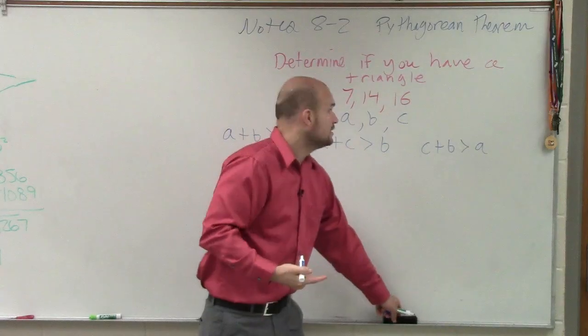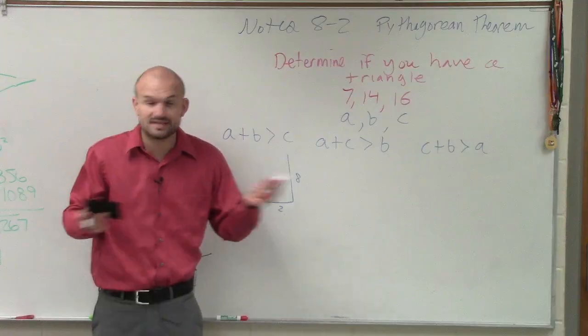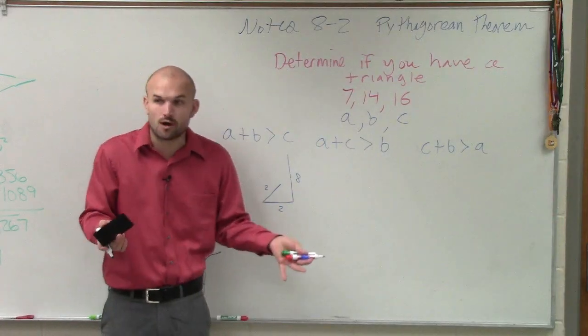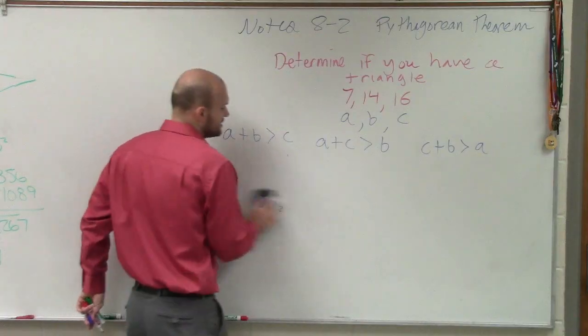And that's what I'm asking you. If I gave you side lengths of 7, 14, and 16, is that a triangle or not? Not is it an acute or obtuse or a right—you guys can determine that by the last parts of notes. But we need to determine, does this work?